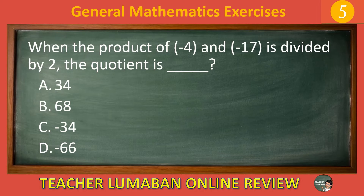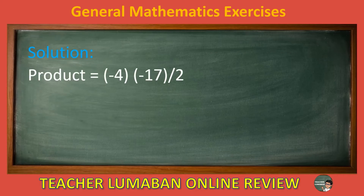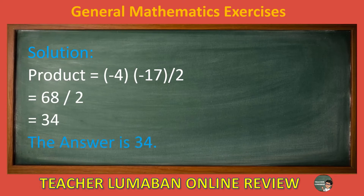5, 4, 3, 2, 1. The correct answer is Letter A: 34. Solution: Product equals negative 4 multiplied by negative 17, over 2, equals 68 over 2, equals 34. The answer is 34.